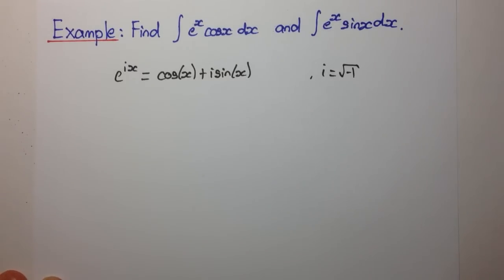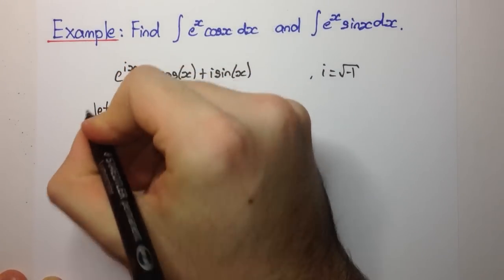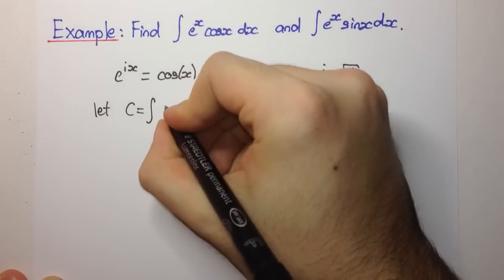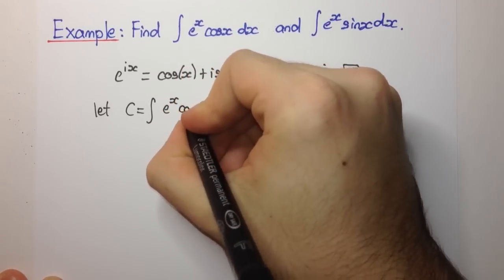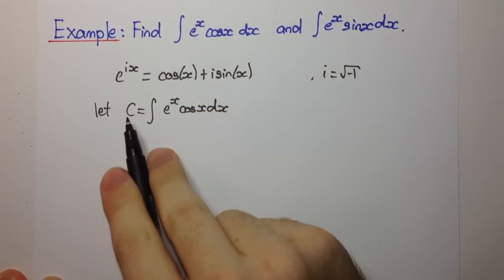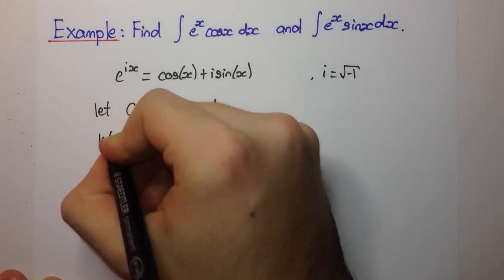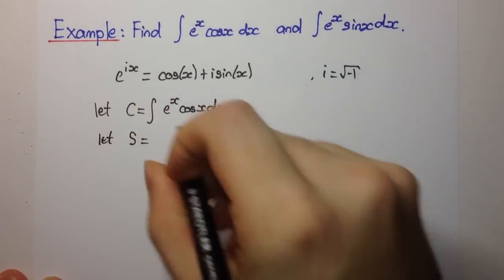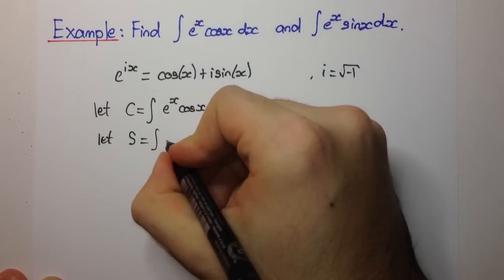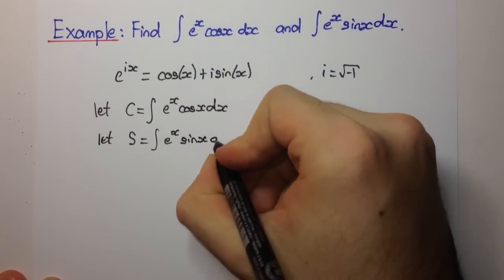So how are we going to apply this? Well, let's call C this integral here — the integral of e to the x cos(x) dx — so we're calling it C for cosine. And also let's let S be the integral of e to the x sin(x) dx, S for sine.